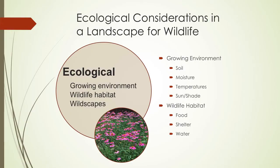What does that have to do with your home landscape? When we design landscapes, we're looking for plants that will work in that growing environment. A growing environment is soils, moisture, temperature, and sun and shade. The other thing we want to do is provide wildlife habitat — that means providing food, shelter, and water for the critters that come to that habitat.